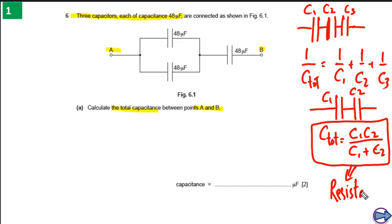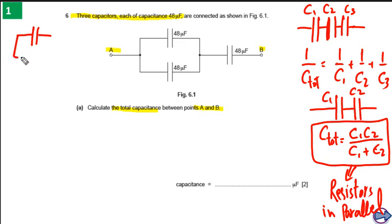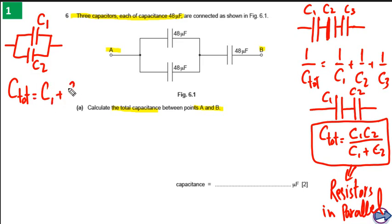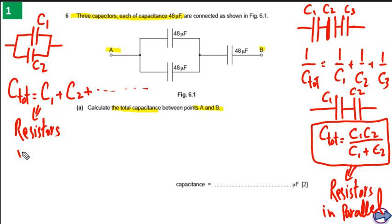When capacitors are connected in series it is similar to resistors in parallel. The second concept is when capacitors are connected in parallel. If we have C1 and C2 in parallel, the total capacitance is simply C1 plus C2. If there are more capacitors in parallel you keep adding them. This is similar to resistors in series.